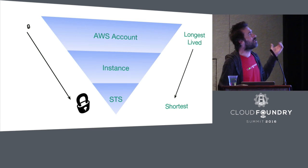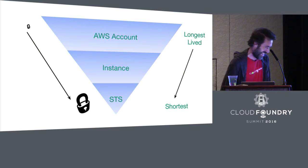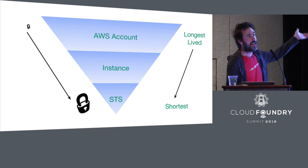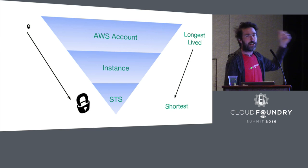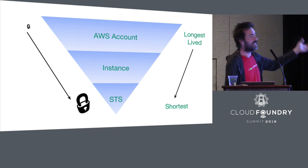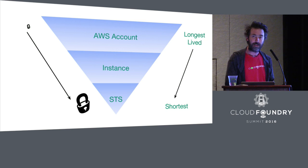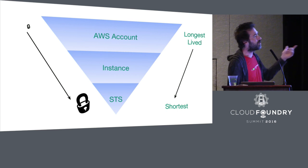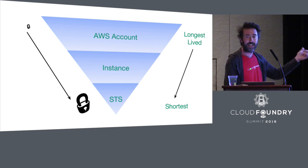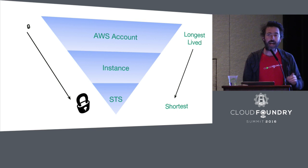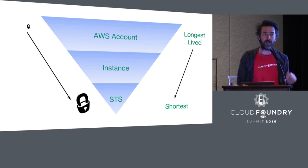What instance profiles let us do is take that high-level key that we want no one to have and assign it to an instance with a role. That role is going to give that instance certain permissions. Then that instance can create a short-term key called an STS key, which is just valid for the single action that you want it to do.